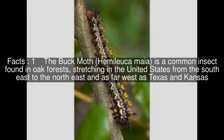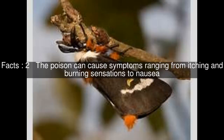The buck moth is a common insect found in oak forests, stretching in the United States from the southeast to the northeast and as far west as Texas and Kansas. The poison can cause symptoms ranging from itching and burning sensations to nausea.